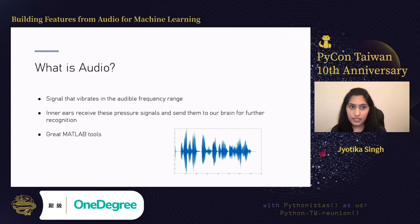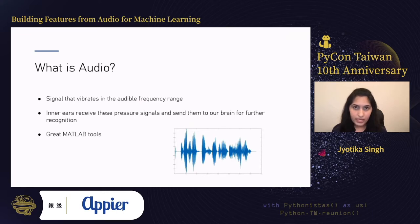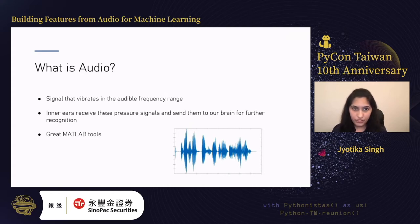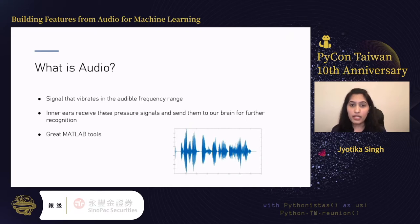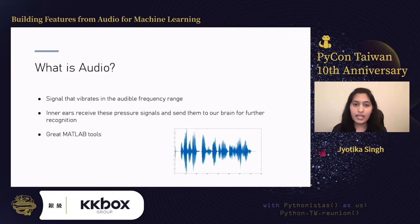Before diving into features that suit audio signals, let's talk about what audio is. Audio is a signal that vibrates in the audible frequency range — the range our ears capture. When I speak and you hear me through speakers, that creates air pressure signals which our ear receives and passes through different sections, finally sent to the brain for recognition. There are very good MATLAB tools for digital signal processing, audio processing, and speech processing.